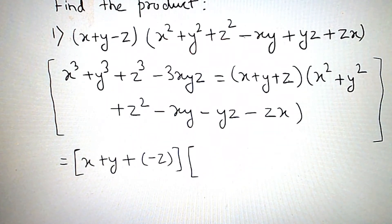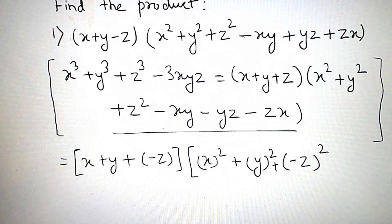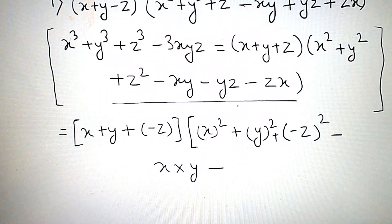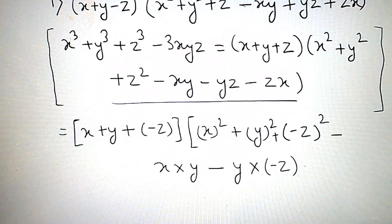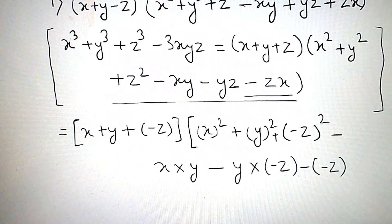अब यहाँ पर x² + y² + z² है, और minus z whole square आएगा। Formula के according minus xy, तो minus x into y हो गया। Minus yz है, तो y into minus z हो गया। Plus zx है, लेकिन question में minus z लिया है, तो minus z into x हो जाएगा।